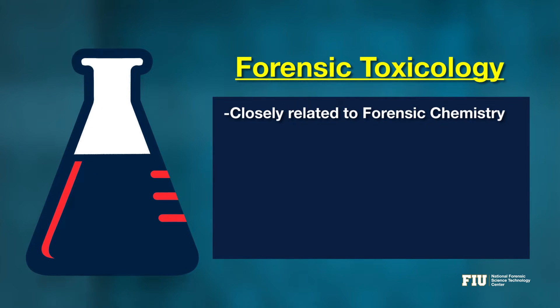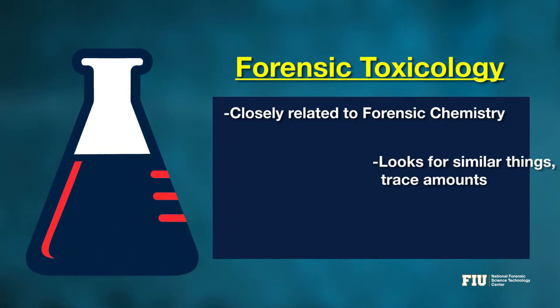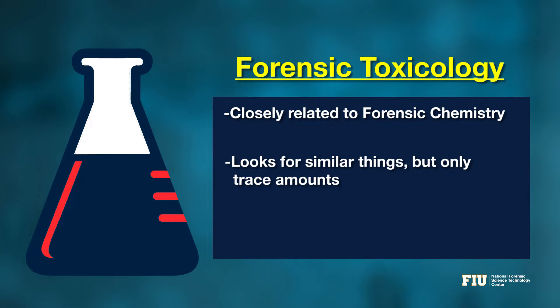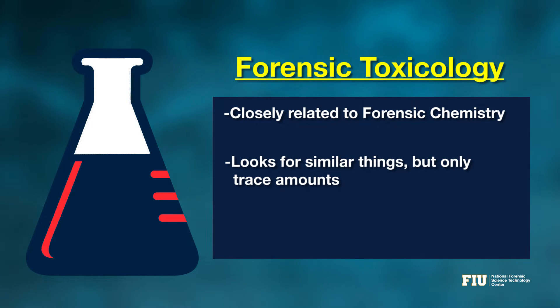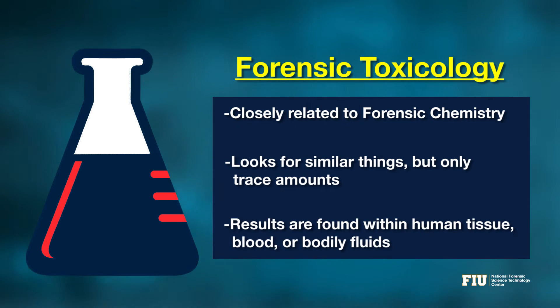A forensic chemist uses chemical methods — be it colorimetric or instrumental — to identify controlled substances, explosives, or other chemical forensic evidence. Forensic toxicology is closely related; it looks for some of the same things, only it's looking for trace levels that might show up in human tissue, blood, or bodily fluids.